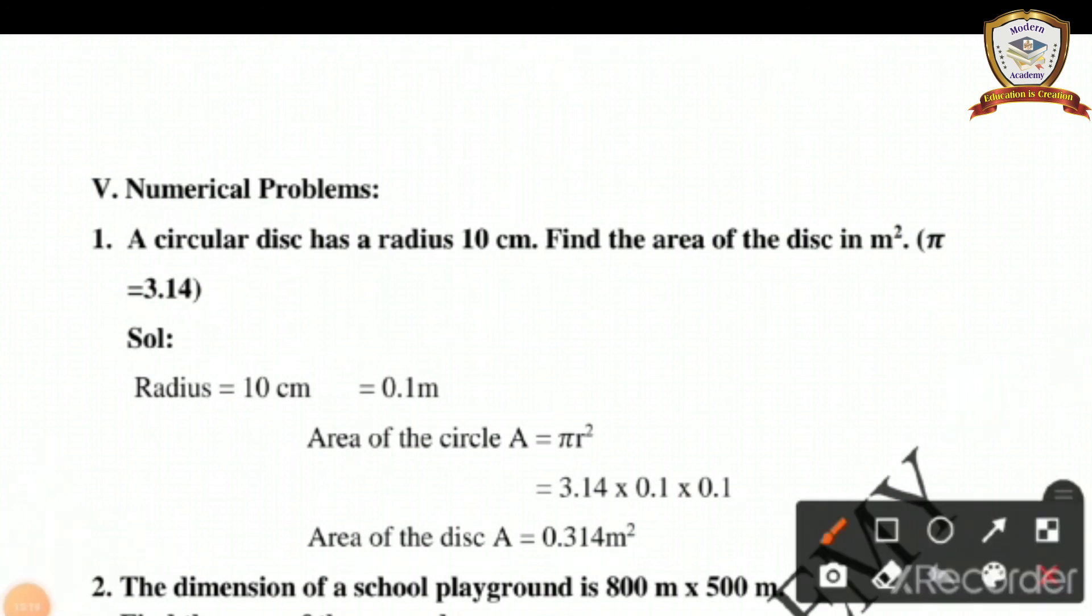A few numerical problems. First one: a circular disk has radius 10 centimeters. Find the area of the disk in meter square. Pi value we have to take as 3.14. Radius is 10 centimeters, we have to change it to meters, so 0.1 meter. Area of the circle equals π R². Pi value 3.14 times 0.1 times 0.1. We get answer 0.0314 meter square.